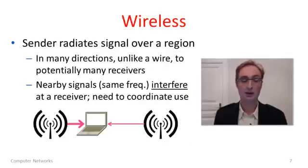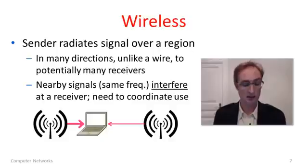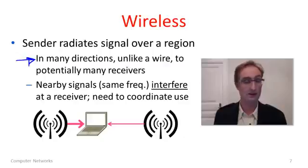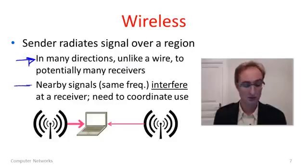The third kind of media we'll look at is wireless. Wireless is fundamentally different from wires and fiber optic in one important respect: the sender is radiating a signal in many directions — radiating across a region. So the signal, rather than being confined to a wire or to a fiber optic cable, radiates in many different directions. This has the advantage that it can potentially reach many different receivers at the same time, to everyone in the vicinity.